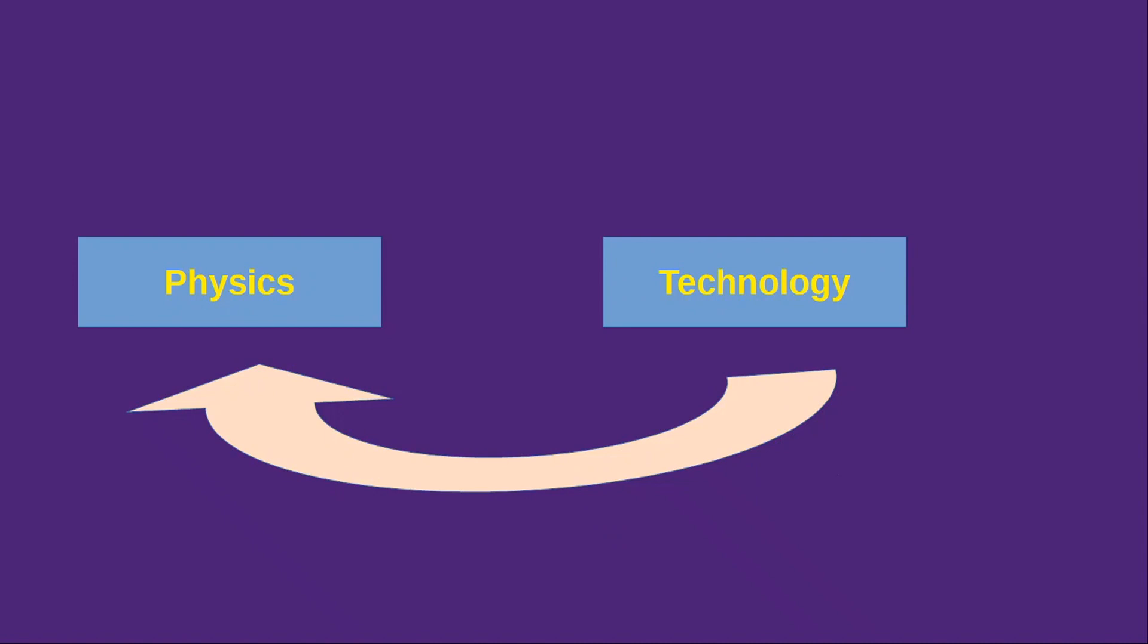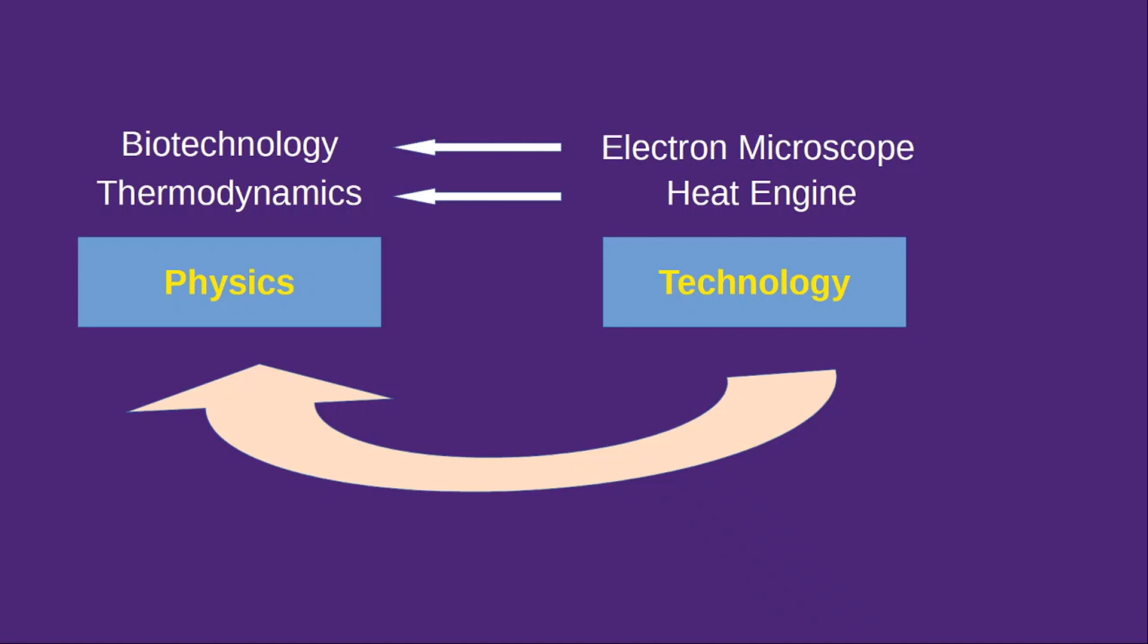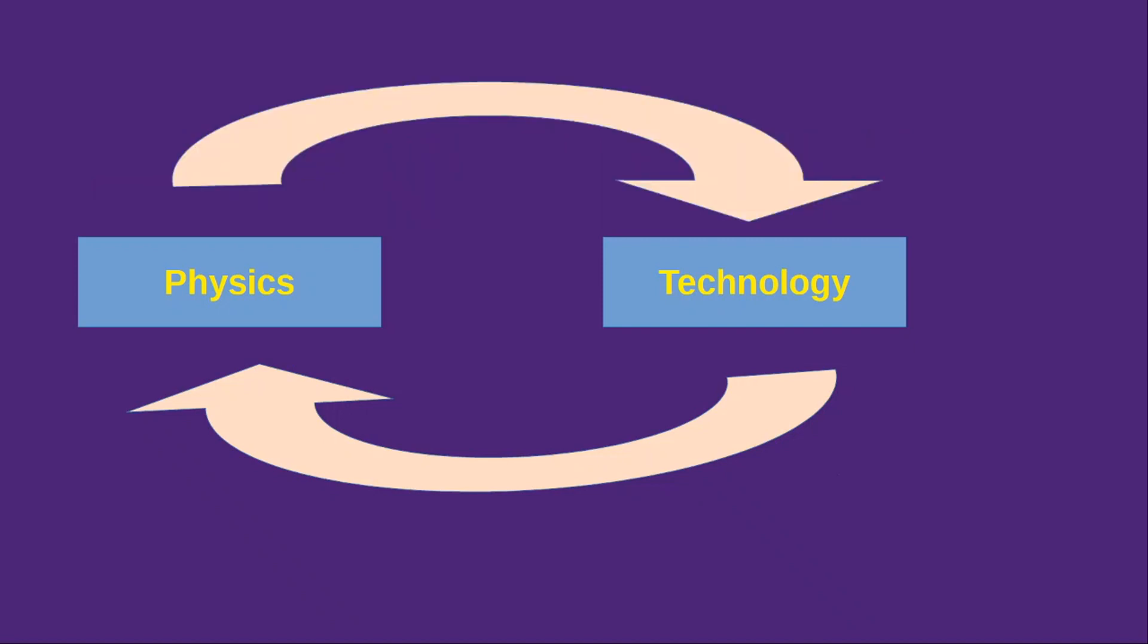Now also from technology, we got new branches in physics, like to improve the efficiency of a heat engine, we got thermodynamics, then from electron microscope, we got biotechnology. So we can say that physics and technology are interrelated.